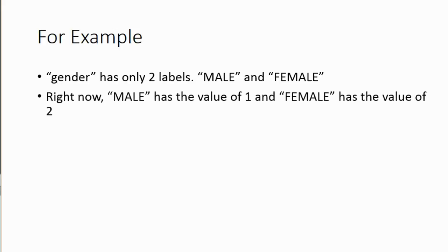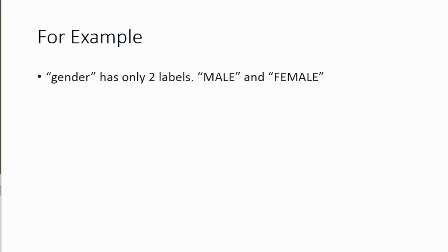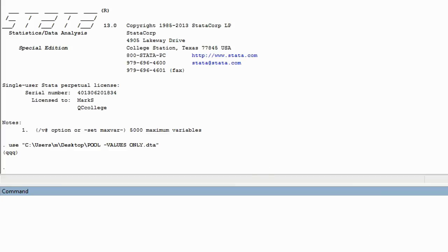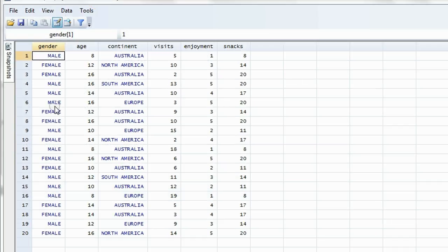Right now, male has the value of one and female has the value of two. The variable gender has only two possible values and only two labels: male and female. Let's prove it. If we go to the data set, we will only see the labels — some are male and some are female. You might remember from prior videos that it's ten males and ten females mixed and spread out.